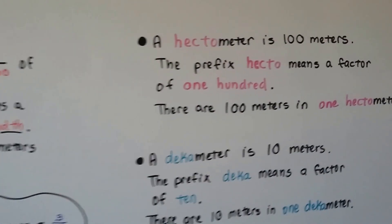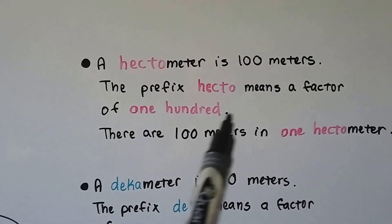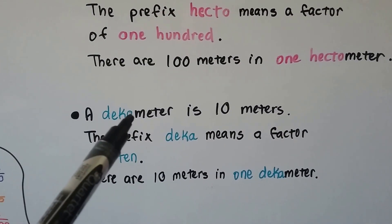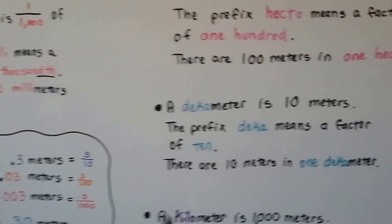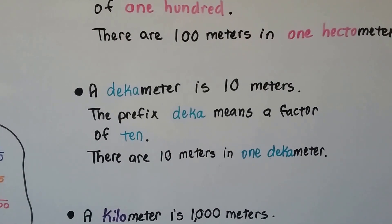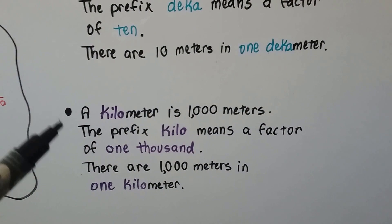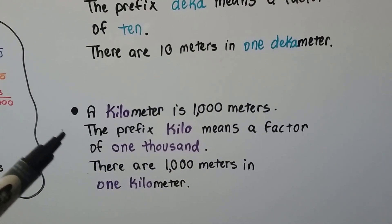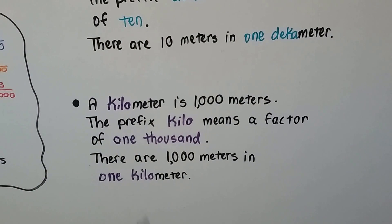When we go larger, a hectometer is 100 meters. The prefix hecto means a factor of one-hundred — notice there's no 'th' now, because we're going bigger. A decameter is ten meters — note it has a 'k' and an 'a', where deci had a 'c' and an 'i' and meant one-tenth. The prefix deca means a factor of ten. A kilometer is 1,000 meters — we measure distance with this, so you could say you went five kilometers to your friend's house, meaning 5,000 meters. The prefix kilo means a factor of one-thousand, and there's no 'th', so it's not a fraction — it's times a thousand.